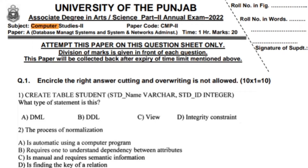Create table student, under value is student name variable char, student id integer. What type of statement is this? Write optional — my answer is Integrity Constraint.